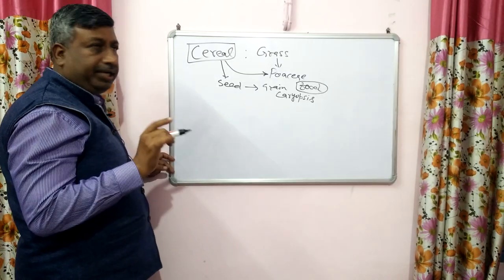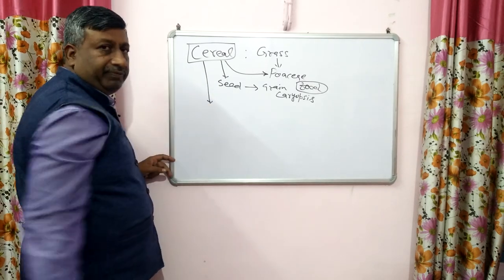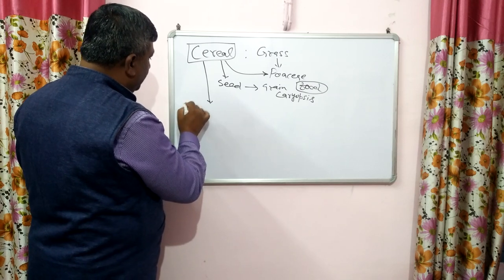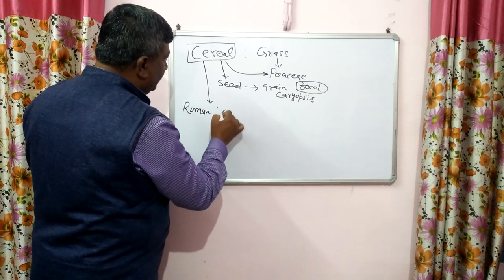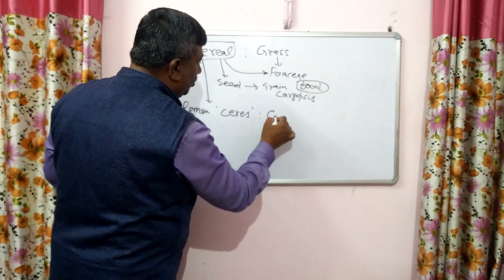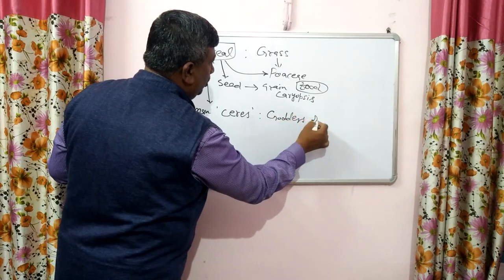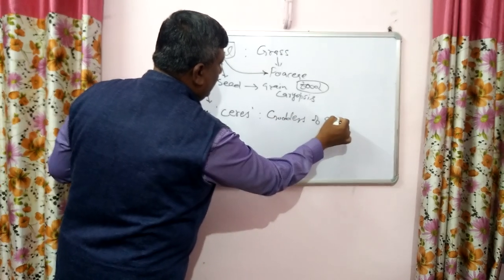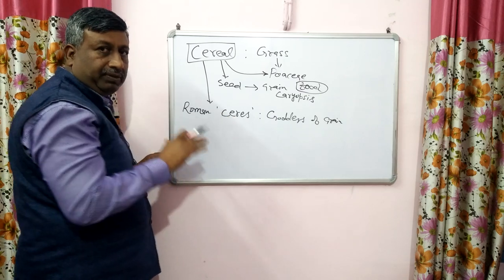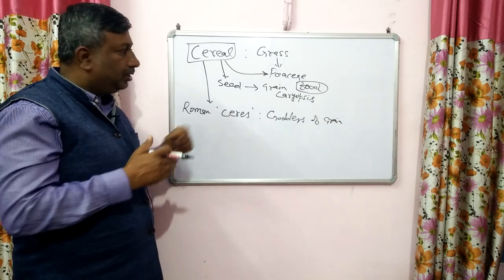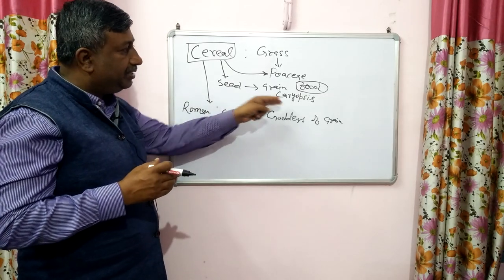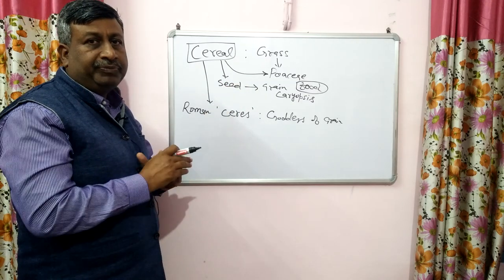If we look into the word origin, the word cereal is derived from the Roman word 'Ceres'. Ceres means the goddess of grain, and sometimes it is considered as goddess of harvest. So cereal is originated from this word Ceres. It is now clear that crops belonging to the Poaceae family whose seeds are used as a food grain are called cereals.